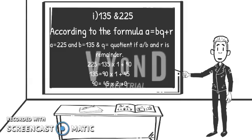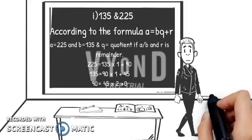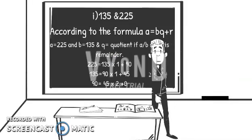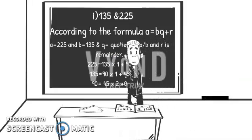After that we take 90 as A and 45 as B. Then the set is 90 equals 45 times 2 plus 0. Since the remainder here is 0, the HCF will be 45.